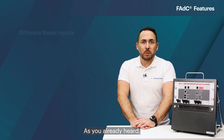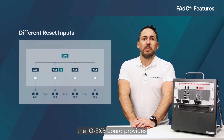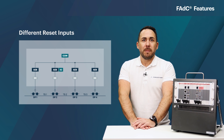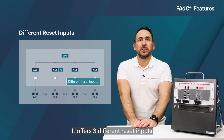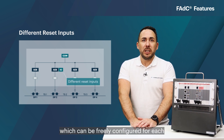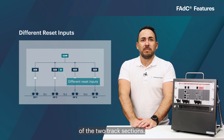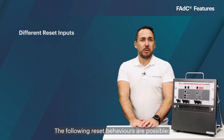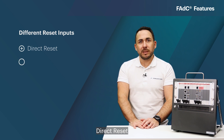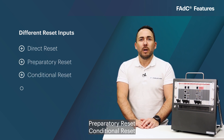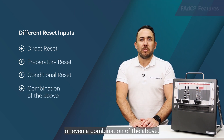The IOXB board provides all necessary track section output and input interfaces. It offers three different reset inputs which can be freely configured for each of the two track sections. The following reset behaviors are possible: direct reset, preparatory reset, conditional reset, or even a combination of both.